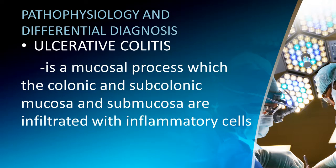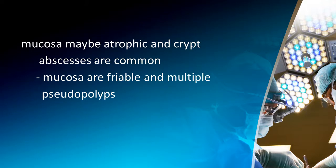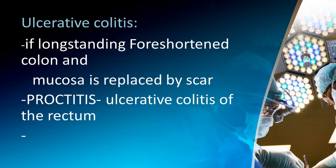Regarding pathophysiology and differential diagnosis: ulcerative colitis is a mucosal process in which the colonic and subcolonic mucosa and submucosa are infiltrated with inflammatory cells. Mucosa may be atrophic and crypt abscesses are common. Mucosa is friable with multiple pseudopolyps.